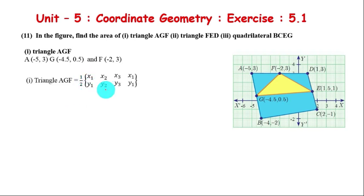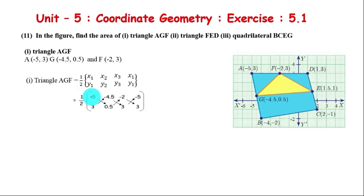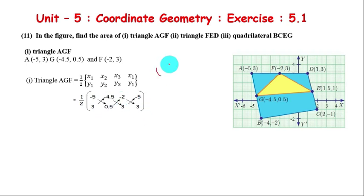The formula uses coordinates X1, Y1; X2, Y2; X3, Y3; and back to X1, Y1. Substituting the points: 1/2 of (-5, 3), (-4.5, 0.5), (-2, 3), then back to (-5, 3). We compute the first bracket minus the second bracket.